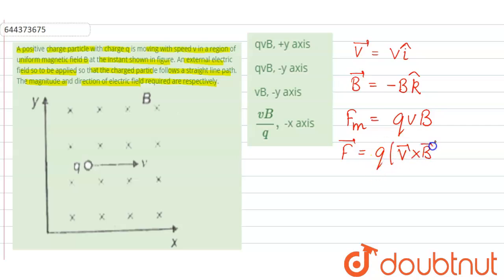That means here if we take the direction it will be î cross minus k̂, that means it will be plus ĵ, plus ĵ means that means it will be along positive y-axis.